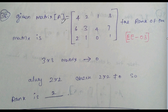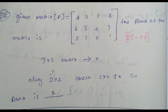Given matrix A = [4,2,1; 3,6,3; 4,7,2; 1,0,1], find the rank of the matrix. I will tell a trick — in just 10 seconds you can find the rank. Check the 3×3 matrix determinant first. If it equals 0, check the next 2×2 matrix. If that is not equal to 0, the rank will be 2. So this problem's rank is 2.